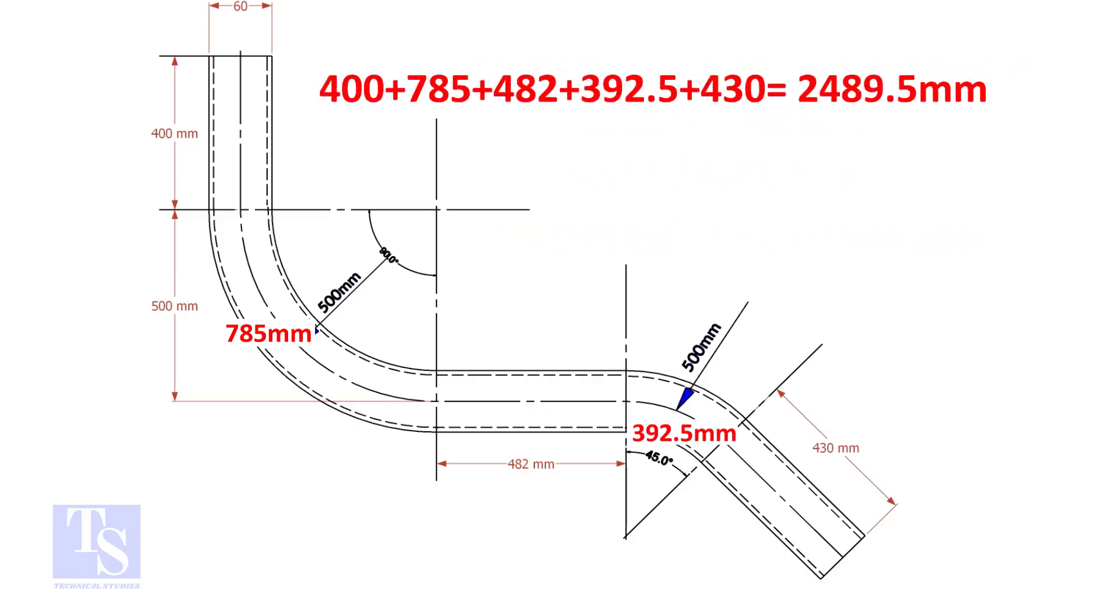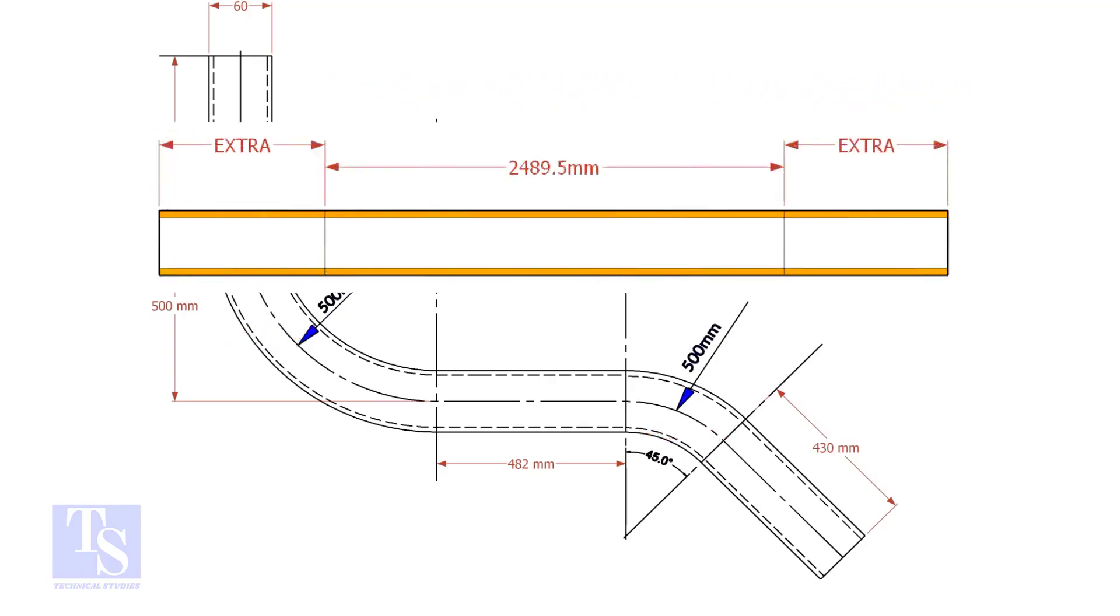Add these lengths. The total length of the pipe is 2489.5 millimeters. An important thing to remember: you may need to add extra length at both ends of the pipe. This extra length depends on the bending process.